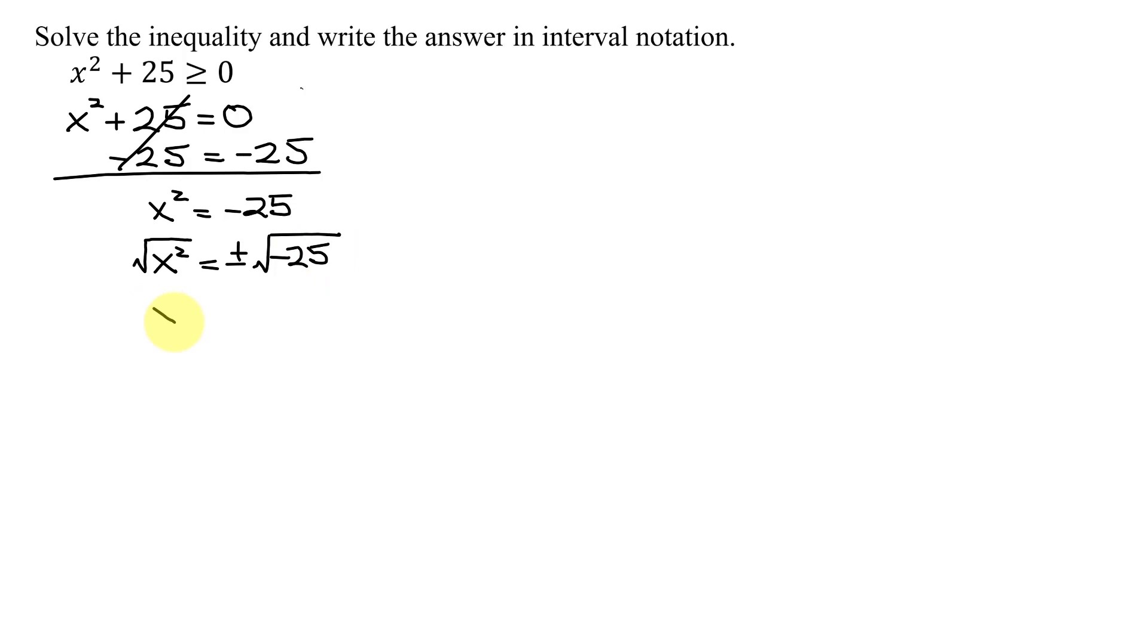So this gives me x equals plus or minus. How do you take the square root of a negative number? Remember, the first thing you do is pull out the square root of negative 1 as i. So that's going to give me i times the square root of 25. And then what is the square root of 25? It's 5. So x equals plus or minus 5i.